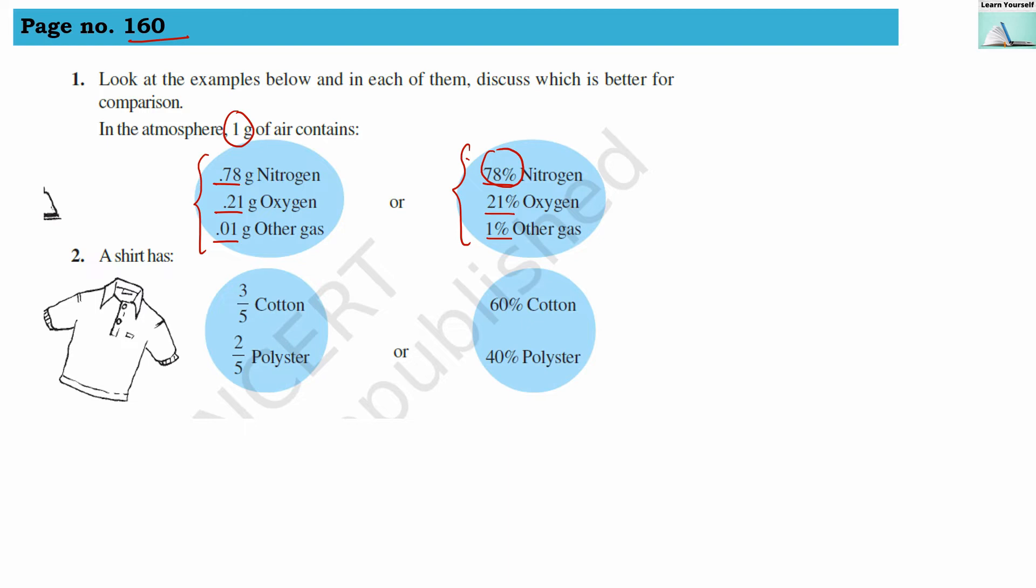is clear and we'll be able to see that nitrogen has a larger share compared to other gases. Oxygen is 21 percent, and in minute quantity, only 1 percent other gases are existing in 1 gram of air.